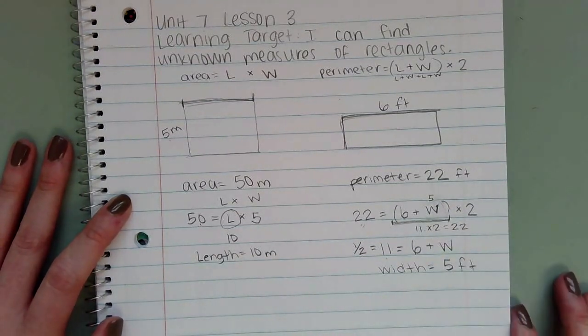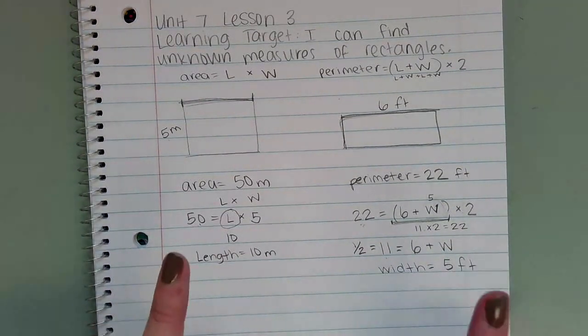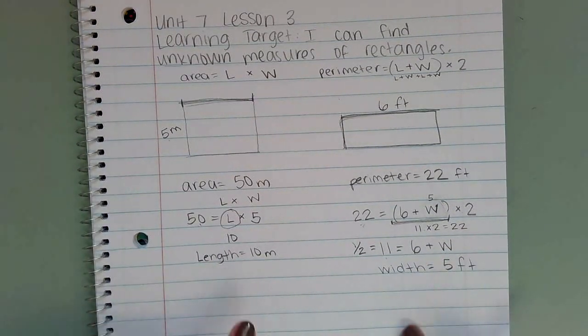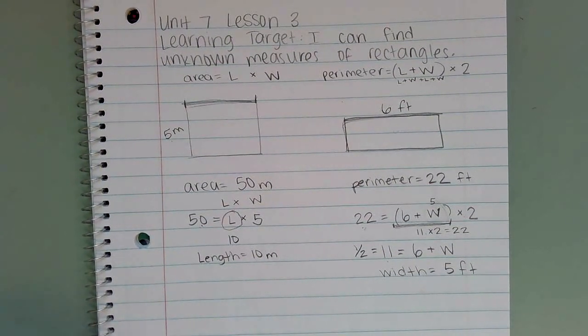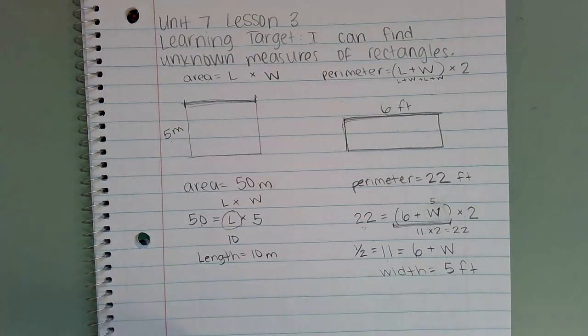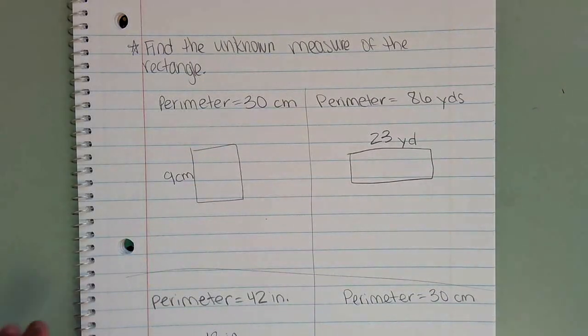I'm going to go through a couple more examples of each, and then one type of word problem for each, and then you will be good to go to do this yourself. Let's start with perimeter.